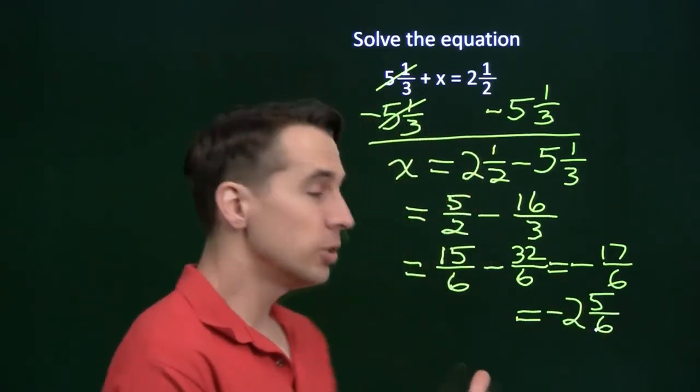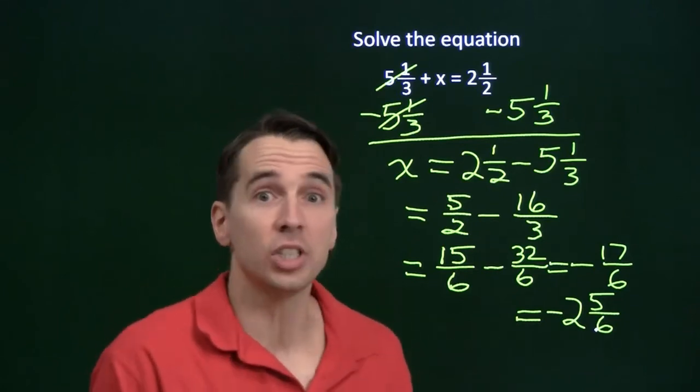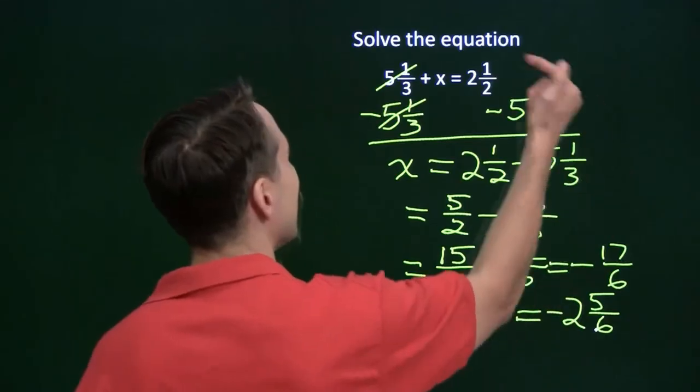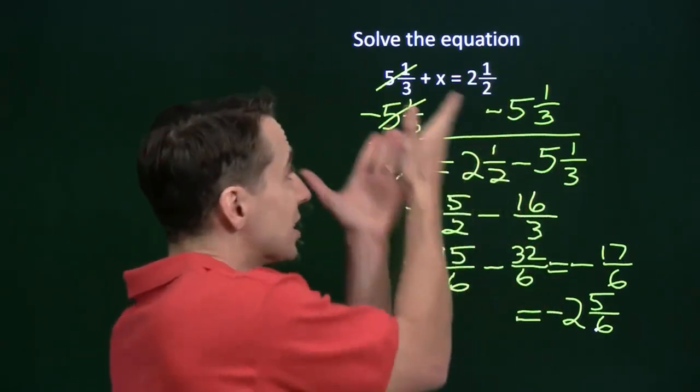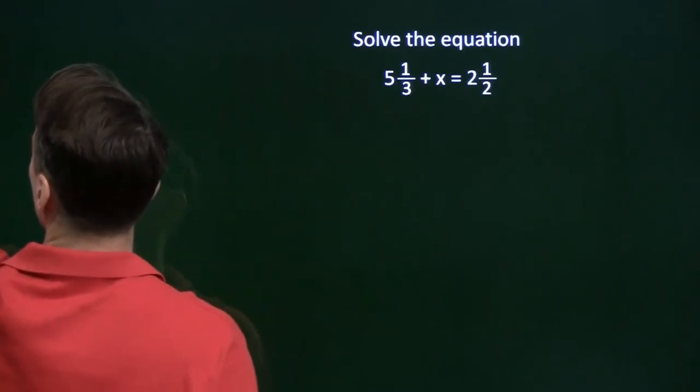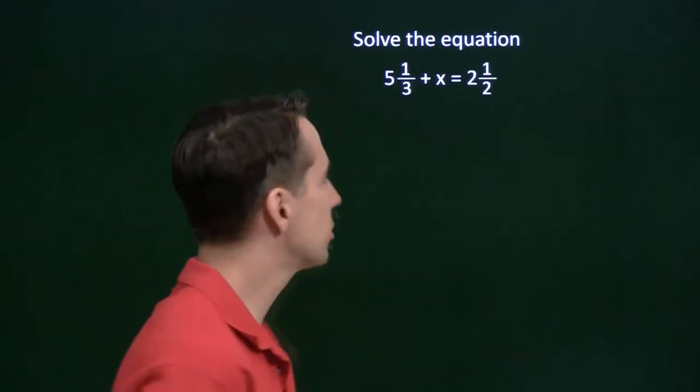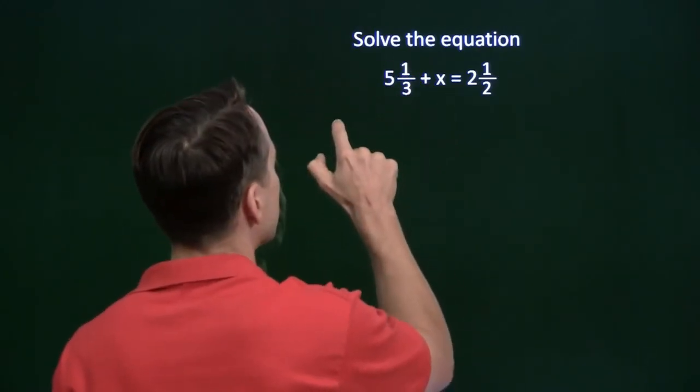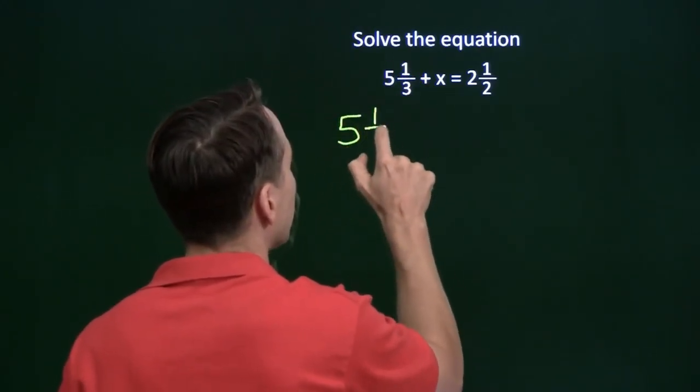Now one thing you can do that's really cool with equations is you can check your answer. You can see if you have the right answer here at the end by taking this and sticking it back in here for x and seeing if the equation works. It's a particularly good idea to do when dealing with fractions because it's so easy to make mistakes with fractions. So we're going to take that minus 2 and 5 sixths, put it in here, and see if we get the right answer.